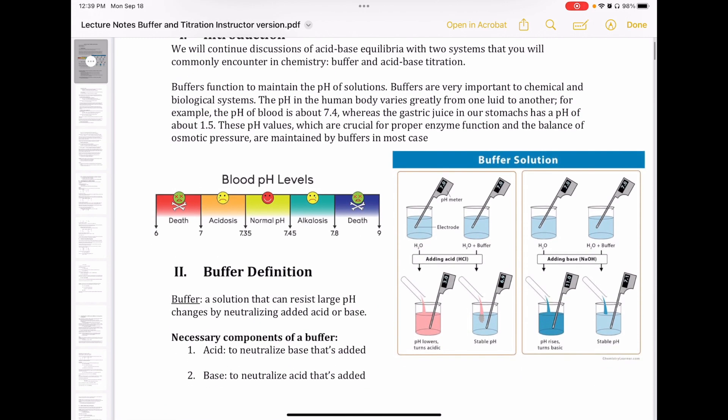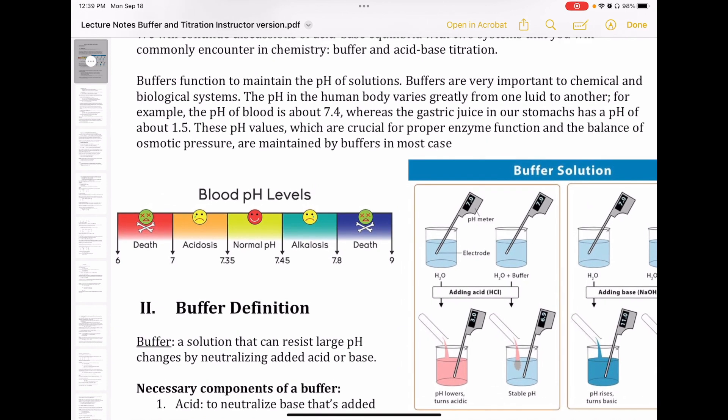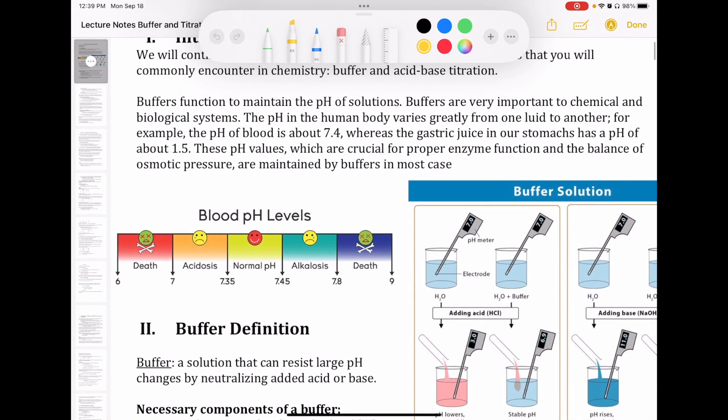And this is the application of acid-base equilibrium in making buffers and in performing acid-base titration. So the first thing is just to define what a buffer is. A buffer is a solution that helps to maintain the pH of that solution. In other words, if you have a buffer in it, then the change in pH is not going to be very significant when we add an acid or a base to that solution.